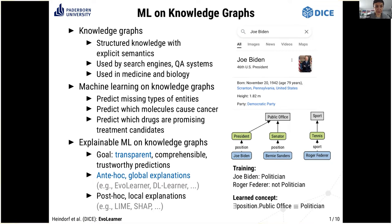In particular, what we do in this work is learn a concept in description logics and use them for explanations. For example, we would like to learn the concept of a politician. We are given training data — who is a politician and who is not. Joe Biden is a politician, Roger Federer is not. With this data, we can learn that somebody who holds the position of a public office is a politician. We can then use this learned concept to make further predictions, and it's also useful for domain experts to understand the predictions.